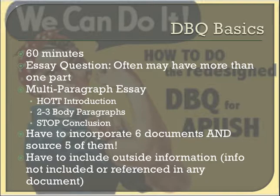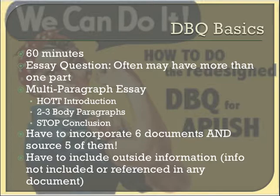Here are some DBQ basics: you get 60 minutes to write it, and the prompt often has more than one part, so it's essential to read it more than once. At the end you'll have a multi-paragraph essay with a historical overview introduction, two to three body paragraphs depending on the skill being evoked, and a conclusion. You're given seven documents; try to incorporate all seven, and source at least five of them — College Board only awards a point if you source three successfully, but sourcing more builds in a safety net. You also have to include outside information not referenced in any of the documents.